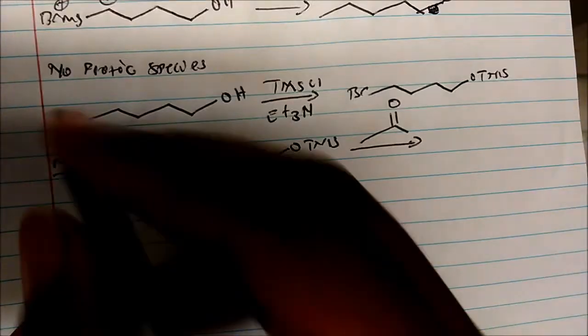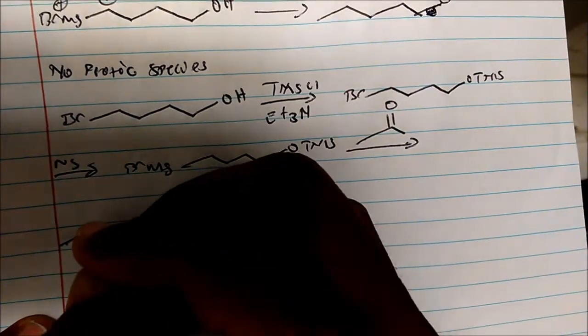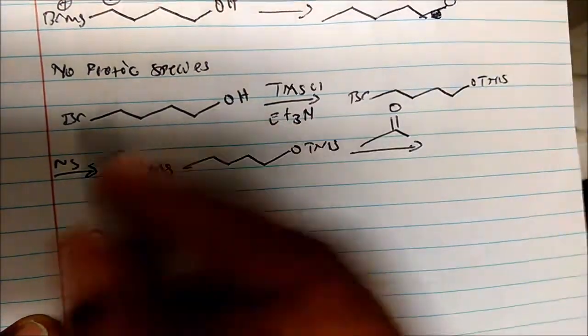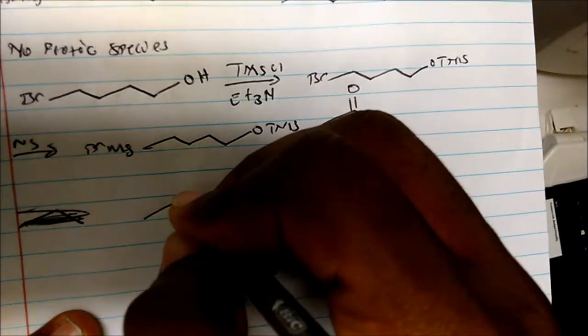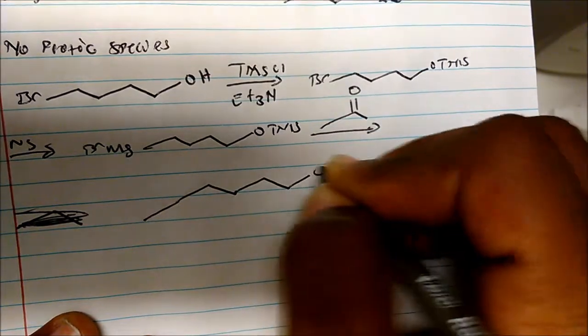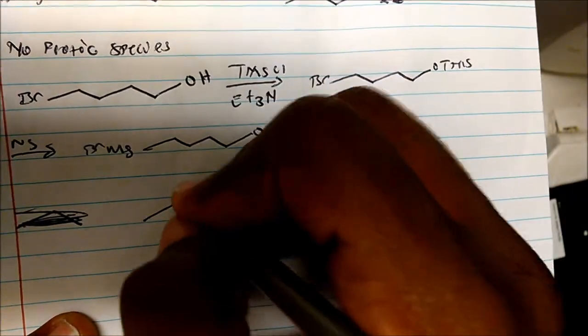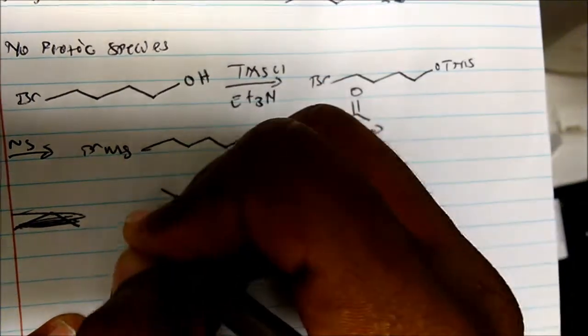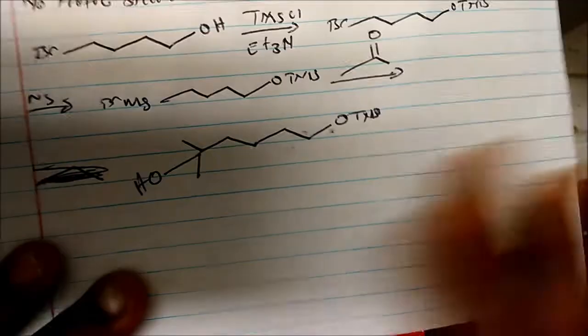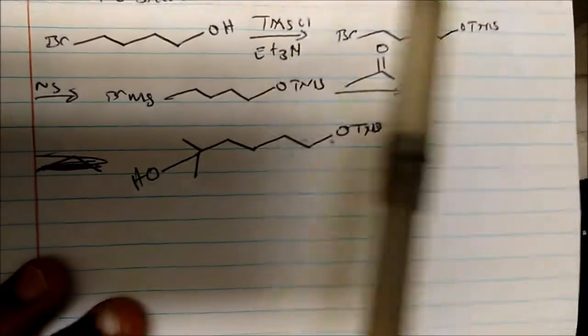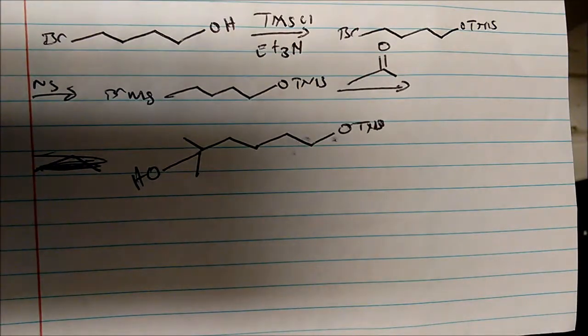Then we're going to get something that looks like this - OTMS - and then we get an alcohol here. So this would be a product from a Grignard reaction. This is not a mechanism video; I have a video about Grignard reactions, so if you want to see the mechanism, you can